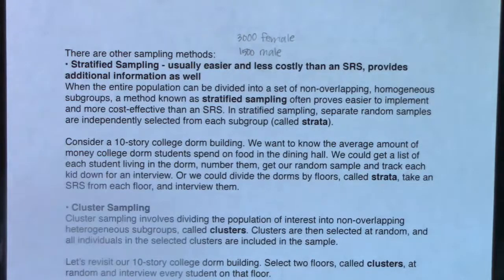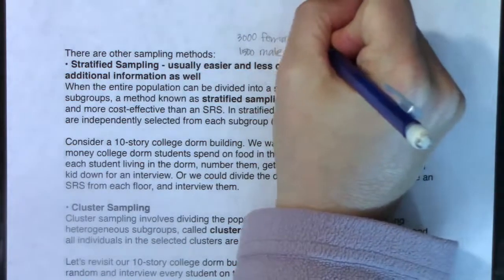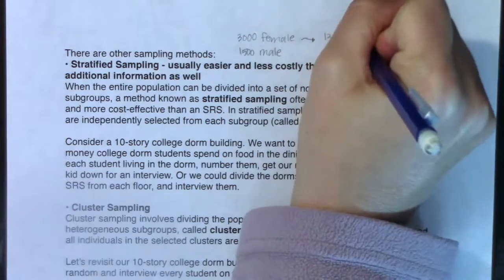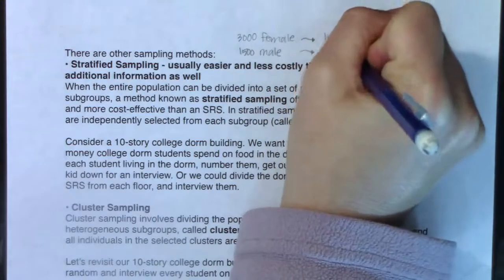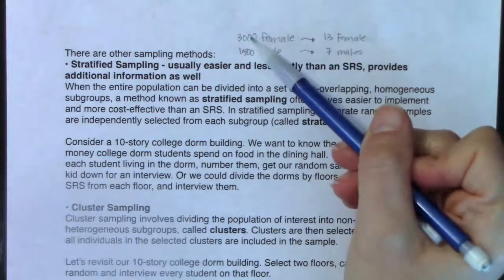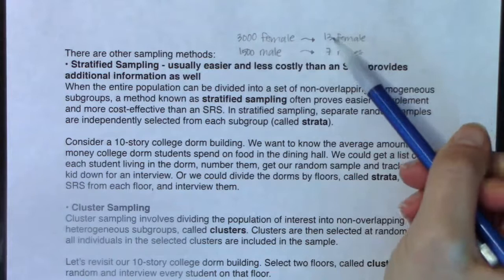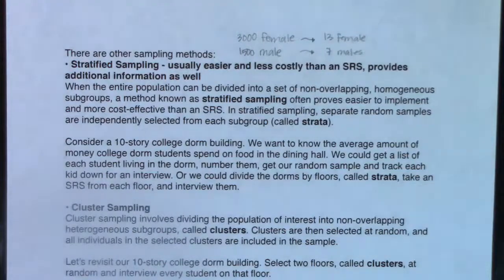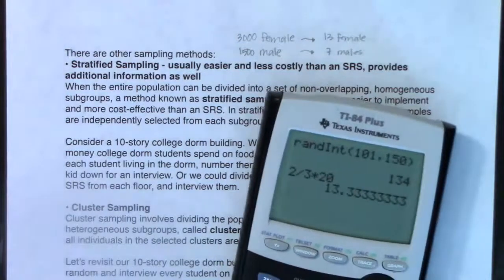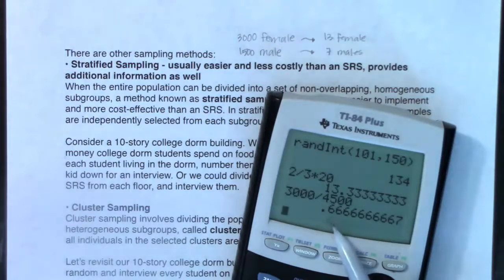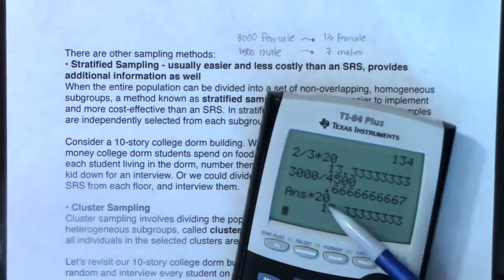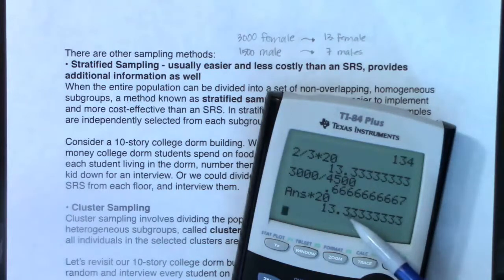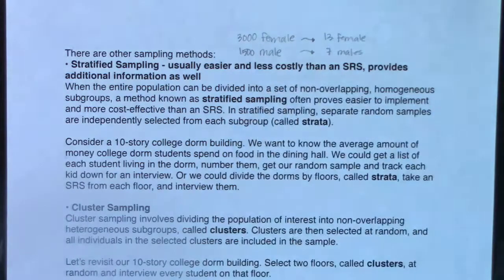If I still want 20 students in my sample at the end of this, let's say I would take about 13 females, and if I needed 20, that would leave me with 7 males. That seems about right. If two-thirds of my students are female and one-third is male, then I want about two-thirds of my sample to be female and one-third to be male.